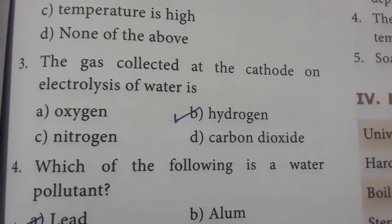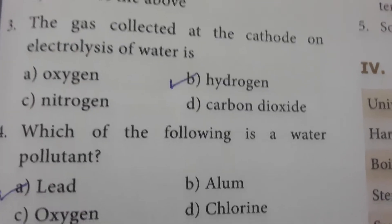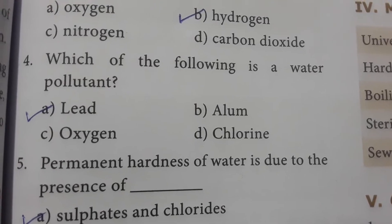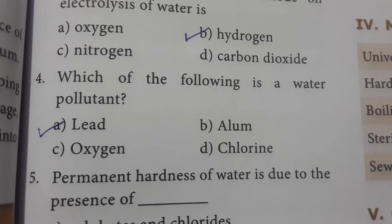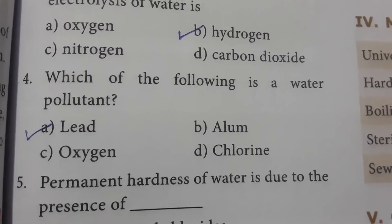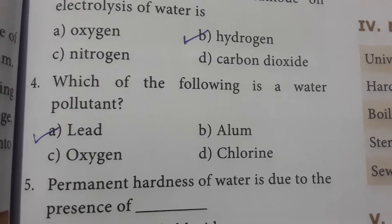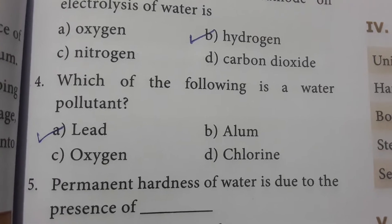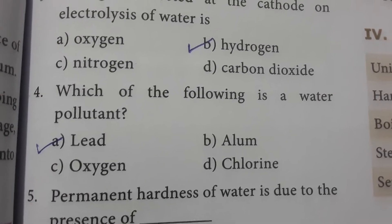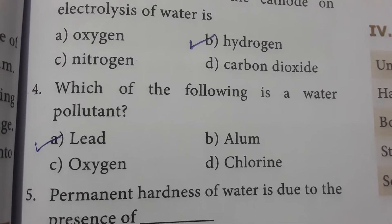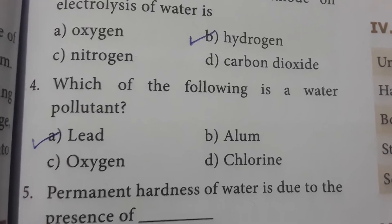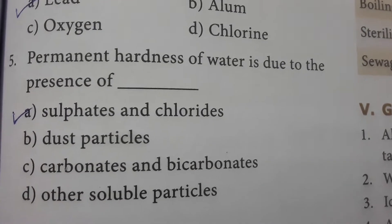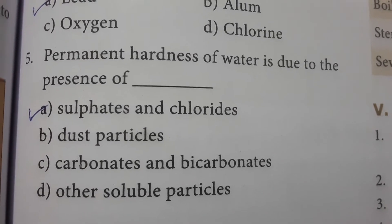Which of the following is a water pollutant? Lead — because aluminium, oxygen, and chlorine are naturally found in water and do not pollute it. But when lead is continuously added to a water body, it causes pollution. Permanent hardness of water is due to the presence of sulfates and chlorides.